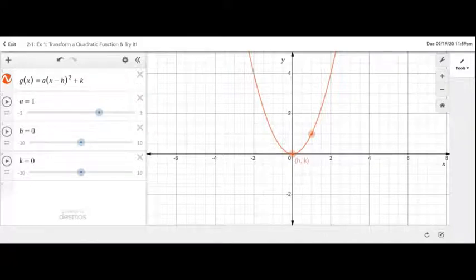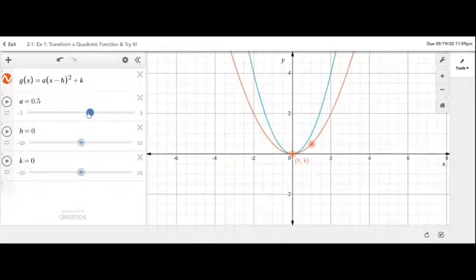And the value of a was between 0 and 1, meaning that the function will be wider. As you can tell from the graph itself, the function became wider.